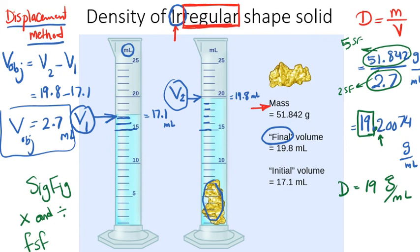So density for this object is 19 grams per mL. This is one real example in chemistry whenever you are going to work on the density of an irregular shaped solid.